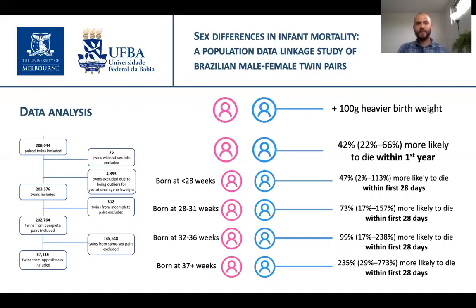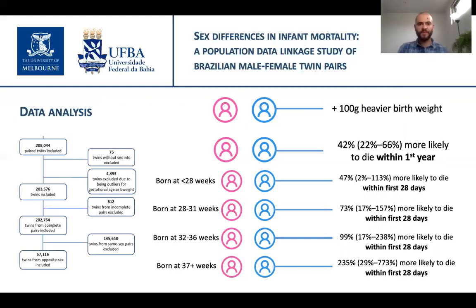Most surprisingly, we found that male twins were about 100 grams heavier on average than their female co-twins. However, while heavier birth weight is usually a predictor of better health outcomes, this was not the case for the male twins in our study. So when we used conditional logistic regression, we found that males were at higher risk of infant mortality than their female co-twins, even after adjusting for birth weight and familial factors, with an adjusted odds ratio of 1.42 — that's 42% more likely to die within the first year.